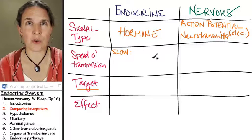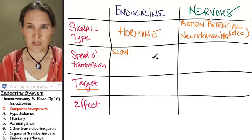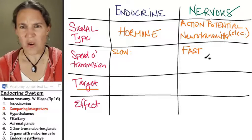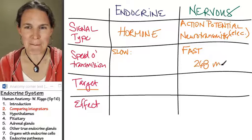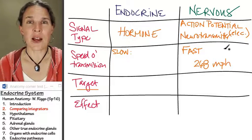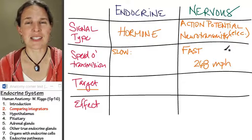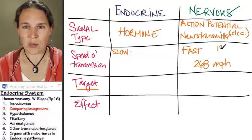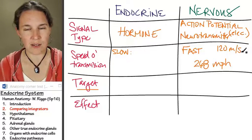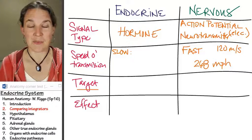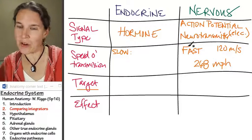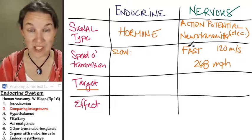A minute to travel through your whole body versus the nervous system, where the electrical message travels at 268 miles per hour — for those not using imperial units, that's equal to 120 meters per second. That's fast. The electrical message travels down the neuron that fast, while the endocrine system has to dump the hormone into the blood first before it gets there.